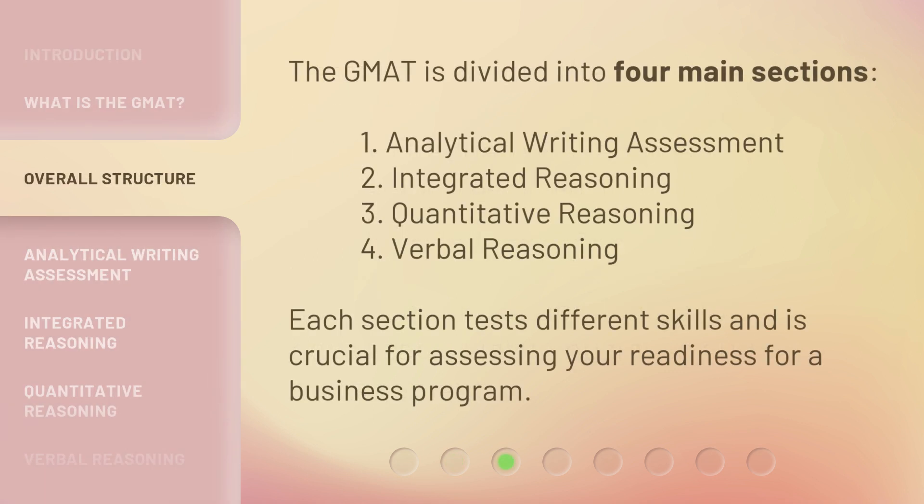The GMAT is divided into four main sections: 1. Analytical Writing Assessment, 2. Integrated Reasoning, 3. Quantitative Reasoning, and 4. Verbal Reasoning. Each section tests different skills and is crucial for assessing your readiness for a business program.